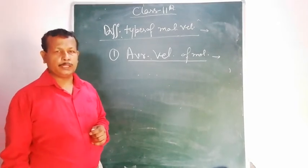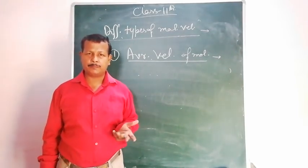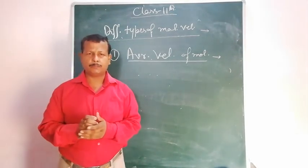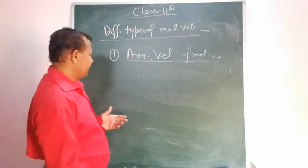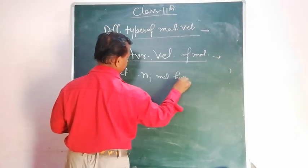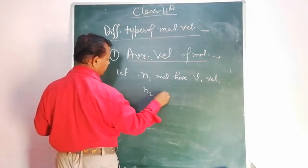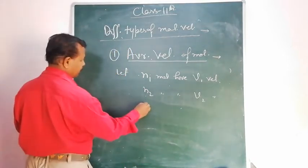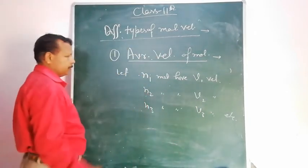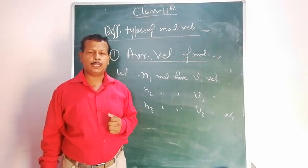In general, the gas has many molecules, in which some molecules have different types of velocity and other molecules have different types of velocity, and so on. That is, some groups of molecules have the same type of velocity. So we can say: let N1 molecules have V1 velocity, N2 molecules have V2 velocity, N3 molecules have V3 velocity, etc. Thus, the total average velocity of the gaseous molecules will be the average of these velocities.